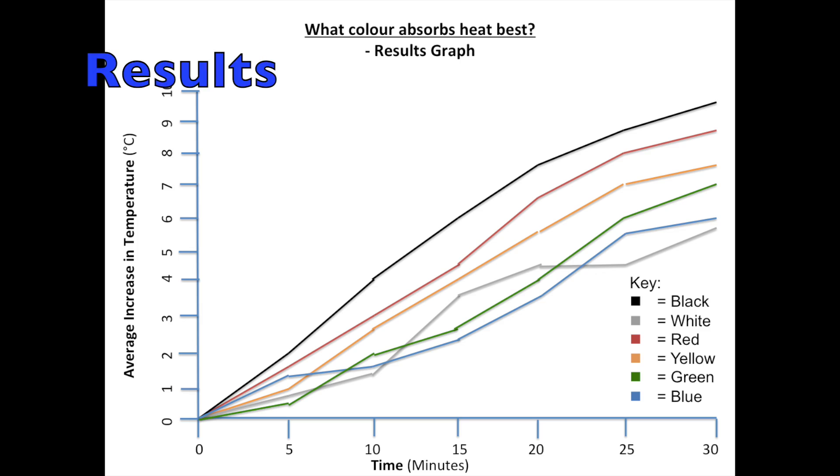From our experiment, we were successfully able to observe heat absorption. From the recorded data, we calculated and graphed the average increase in temperature amongst each of the six colors. This allowed us to see which colors had the most rapid increase in heat and which had the least.